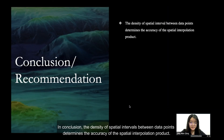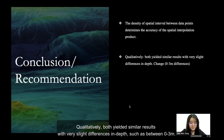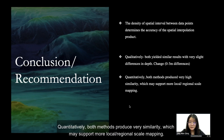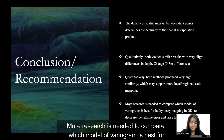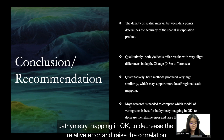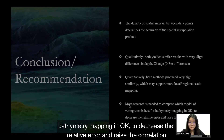In conclusion, the density of spatial intervals between data points determines the accuracy of the spatial interpolation product. Quantitatively, both methods yielded similar results with very slight differences in depth such as between 0 to 3 meters. Both methods produced very similar results, which may support more local and regional scale mapping. More research is needed to compare which variogram model is best for bathymetric mapping with Kriging, and to decrease the relative error and raise the correlation.